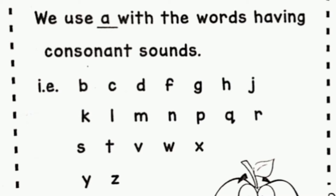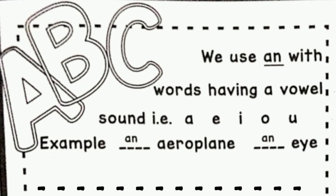Now we've seen where we use 'a'. Let's see where 'an' is used. We use 'an' with words having a vowel sound. For example: an aeroplane, an eye.